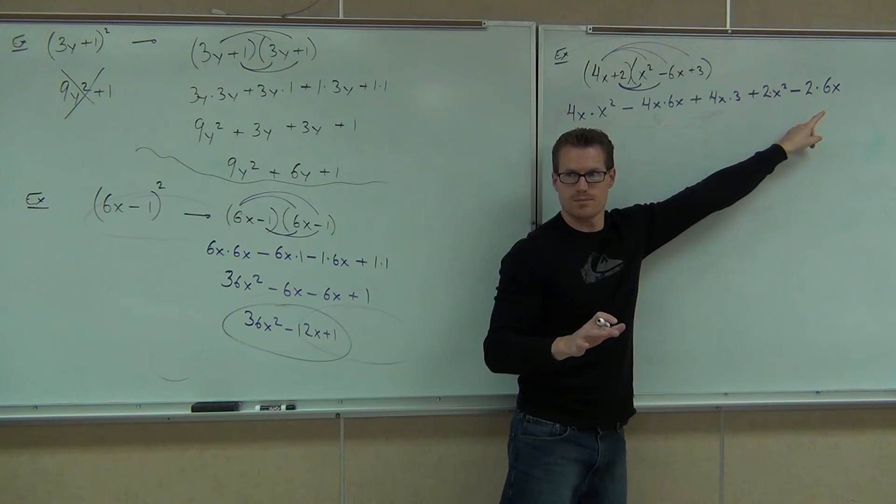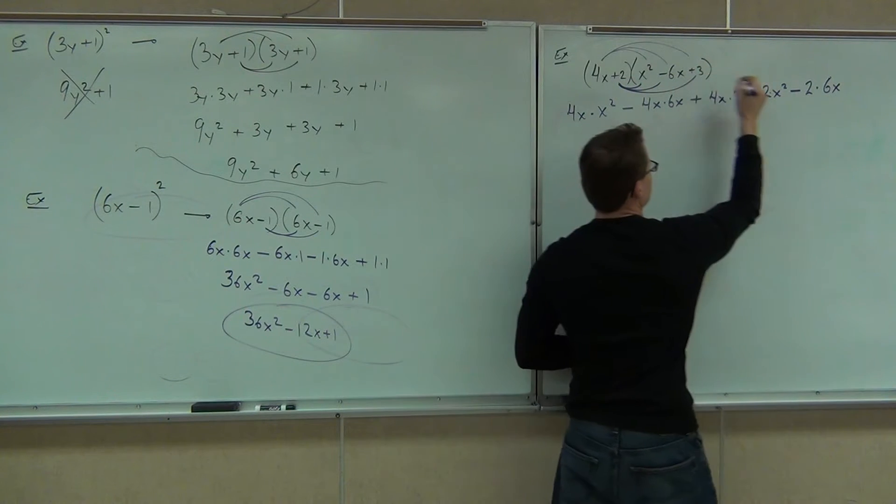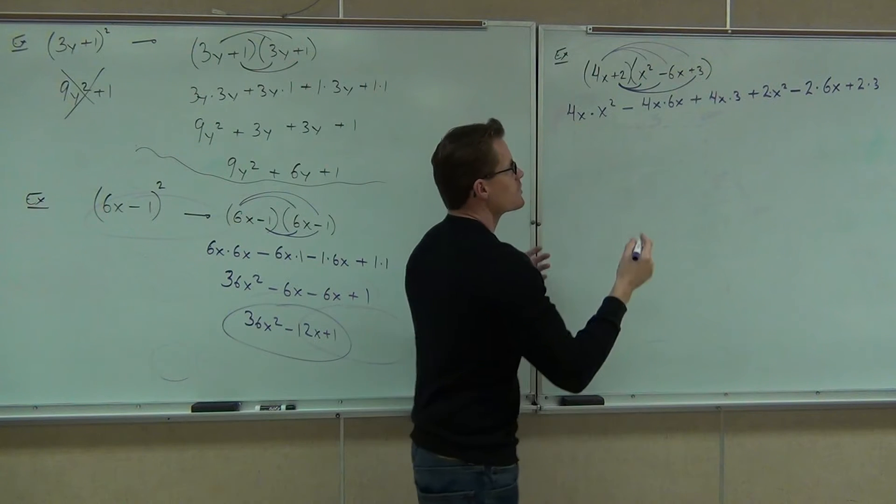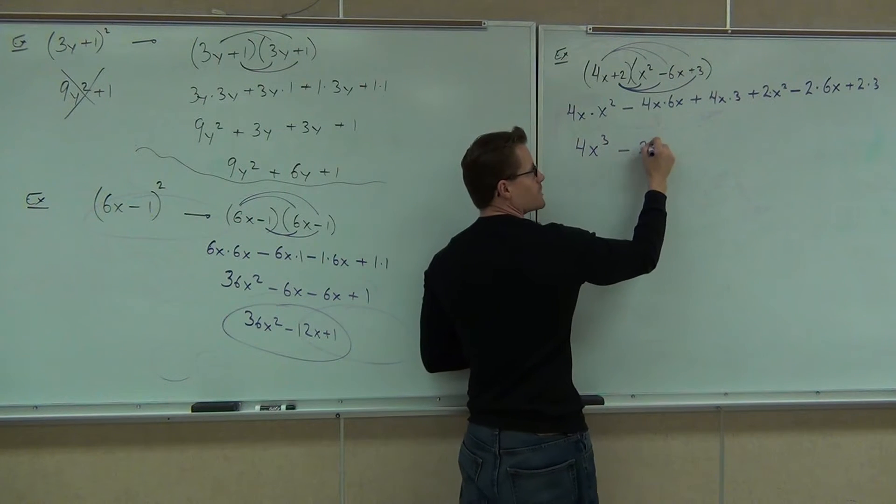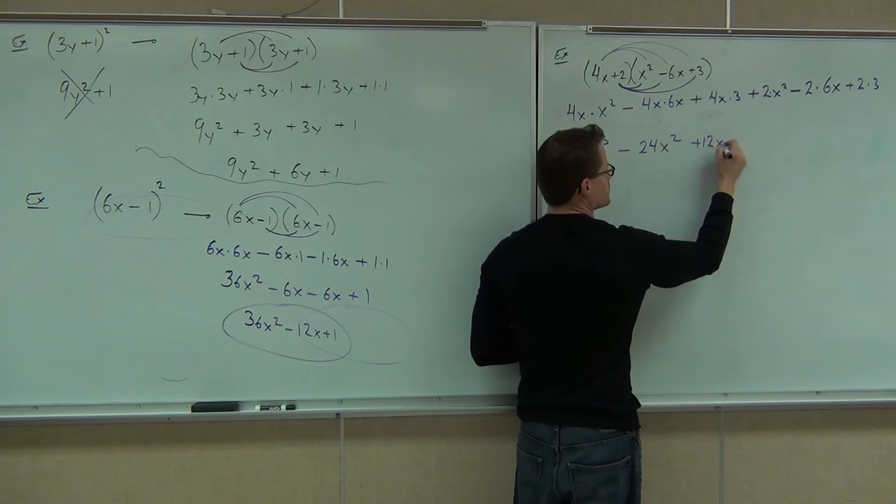You still sure you're okay with it? And then lastly, I've got what? So if we do the math, we've got 4x³, we've got minus 24x², we've got plus 12x,